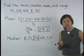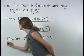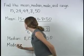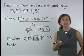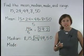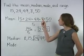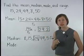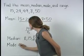Next, let's find the mode. The mode is the number that appears most frequently in a data set. Notice that each number in our data set appears only once, so there is no mode.